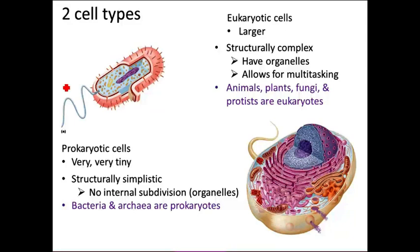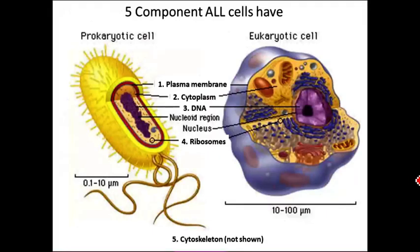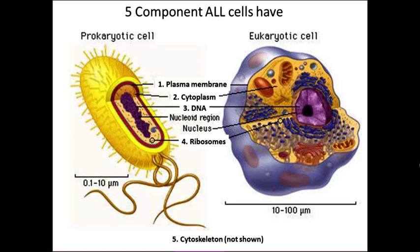What we're going to do today is talk about what's inside of these cells and what those things do. We're going to first start out talking about components that are found both in prokaryotic cells and in eukaryotic cells. Here are those five components. Note I'm not saying organelles because prokaryotic cells do not have any organelles, whereas eukaryotic cells do. However, they still have five basic things in common.